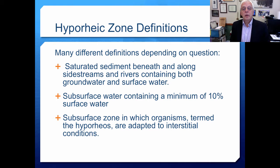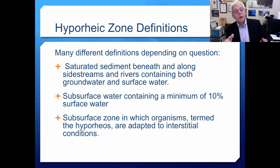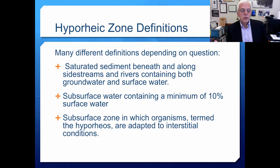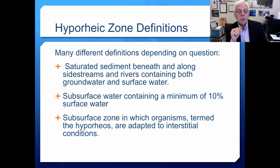The hyporheic zone can be defined as the saturated sediment beneath and along the sides of streams and rivers containing both groundwater and surface water. If you dig down along a stream into gravelly substrate, you'll notice there is actually some flow — a transport of material that is a mixture of river water and groundwater as the groundwater is entrained by surface water flux through the more porous parts of the soils. The hyporheic zone can also be defined as subsurface water containing a minimum of 10% surface water.